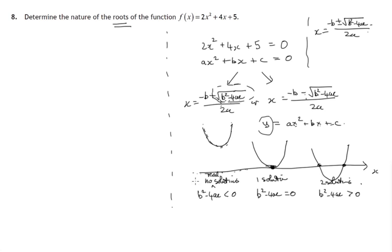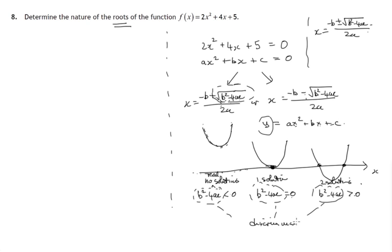So we basically have to look at b squared minus 4ac, which is called the discriminant, and find out whether it's negative, zero, or positive. The discriminant holds the key to analysing whether there are two, one, or no roots to this function.